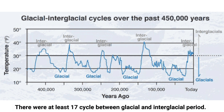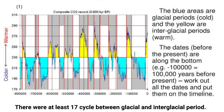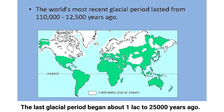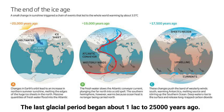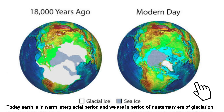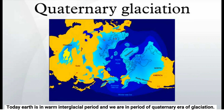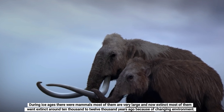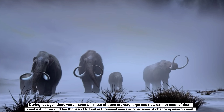There were at least 17 cycles between glacial and interglacial periods. The last glacial period began about 115,000 years ago. Today, Earth is in a warm interglacial period within the Quaternary glaciation.